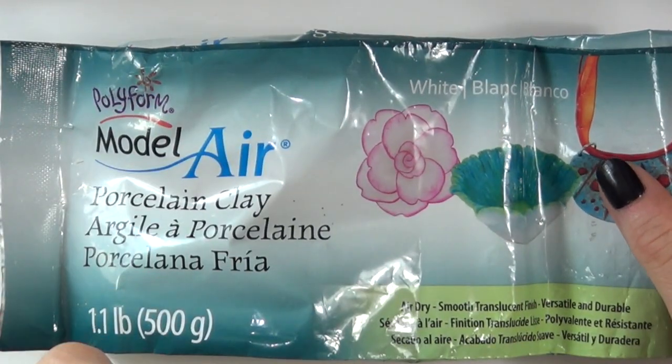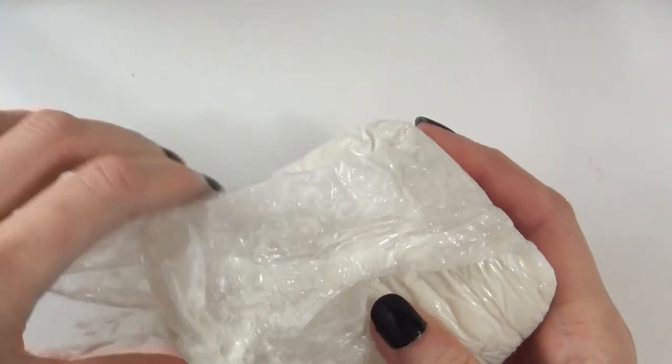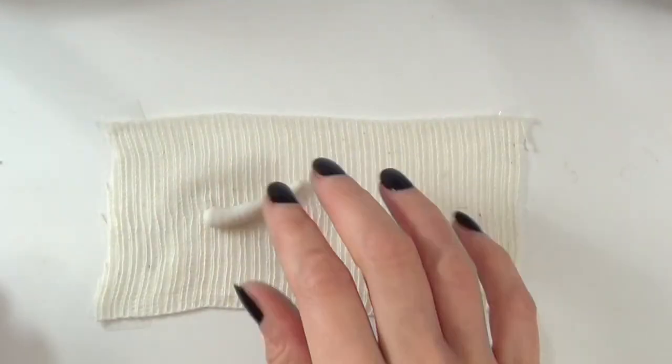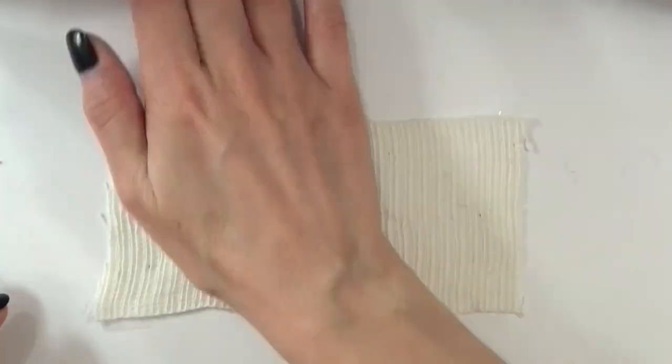This is what it looks like. I'm just going to roll it into a snake. Just make sure that the tail is pointy and the head of the snake is kind of rounded.